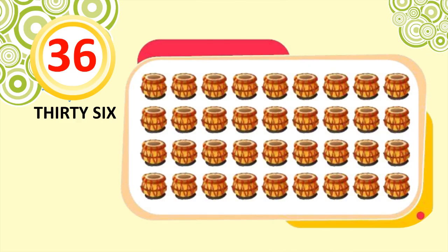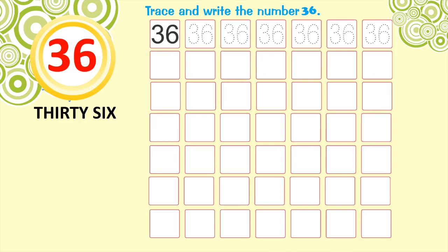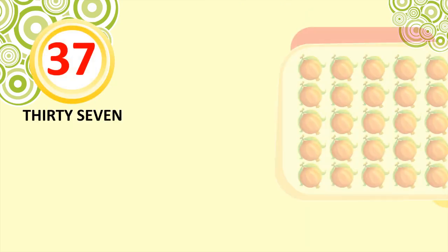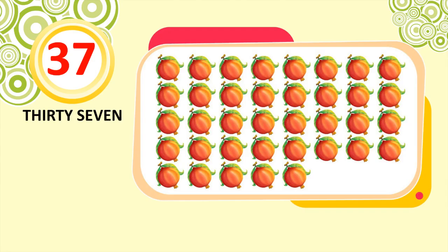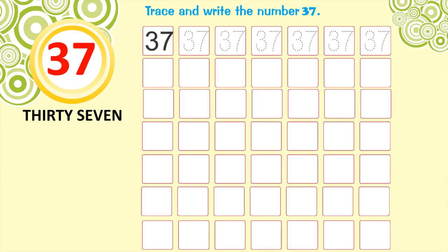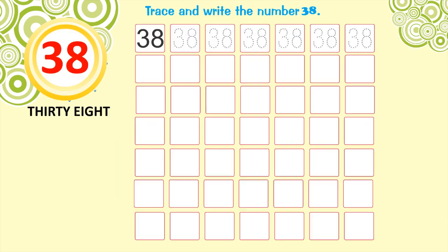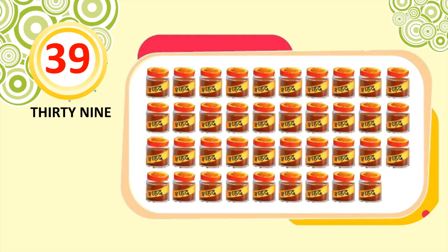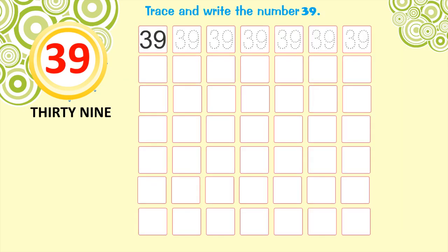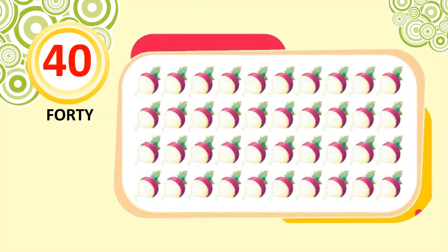34. 34 tambourines. Trace and write the number 34. 35. 35 butterflies. Trace and write the number 35. 36. 36 tablas. Trace and write the number 36. 37. 37 pomegranates. Trace and write the number 37. 38. 38 guavas. Trace and write the number 38. 39. 39 honeys. Trace and write the number 39. 40.